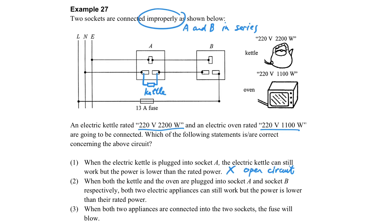How about the second statement? Let's suppose we connect the two items here. Can they work at the rated power? We can see that this time, the potential difference across both is 220V, but because they are connected in series, both of them cannot share the same amount of voltage.